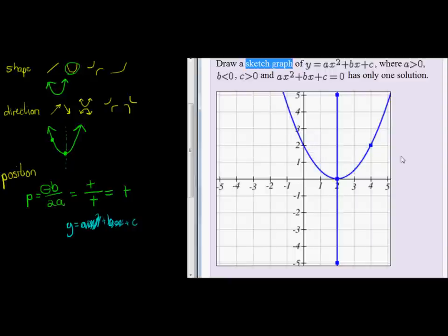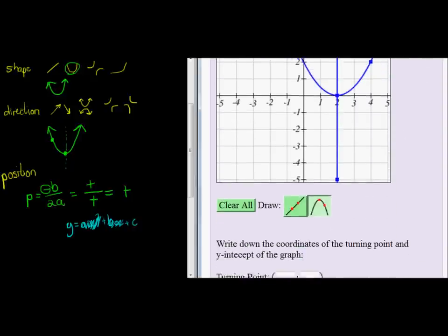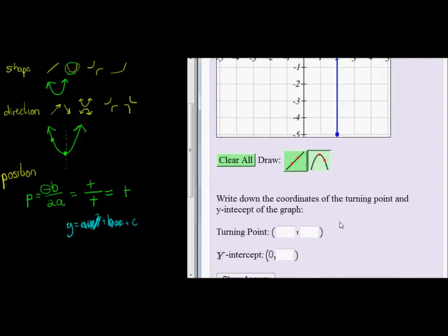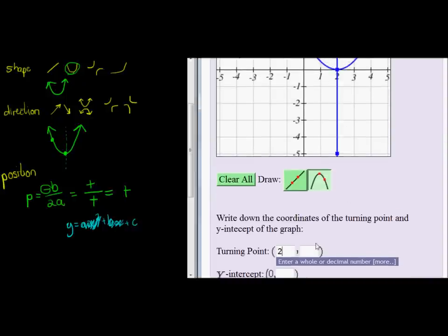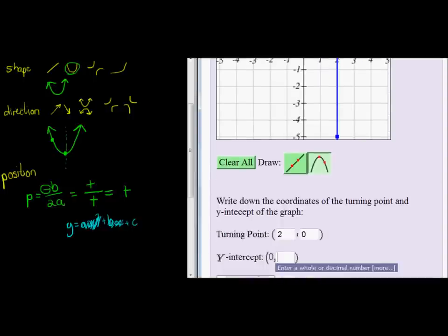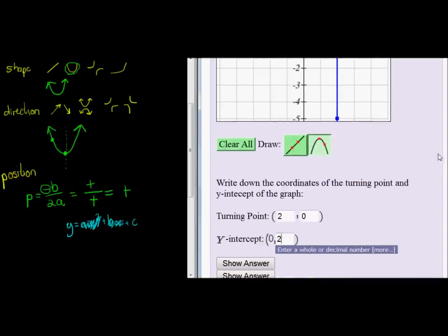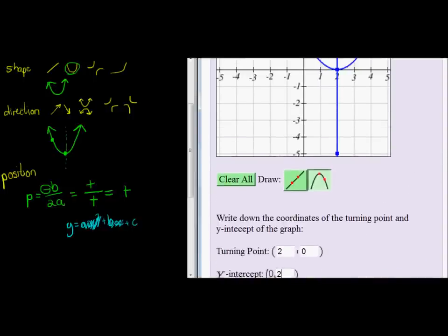So let's stick to there and just enter the information they asked for, the turning point. The x-coordinate is 2, the y-coordinate is 0, and finally the y-intercept is positive 2. There we go. If we check that answer, it should be correct.